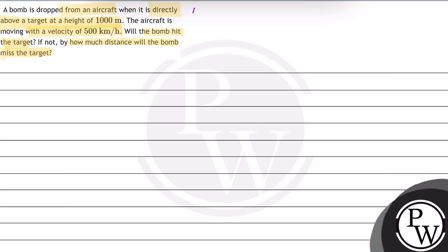In this question, the key concept is motion in a plane. We have given that aircraft is flying horizontally with a velocity of 500 km per hour and a bomb is dropped at a target which is 1000 meters below from the aircraft.